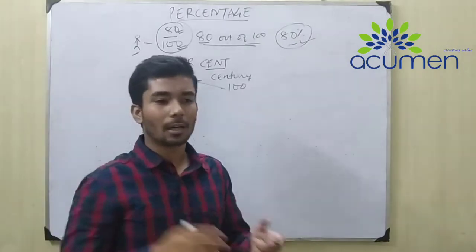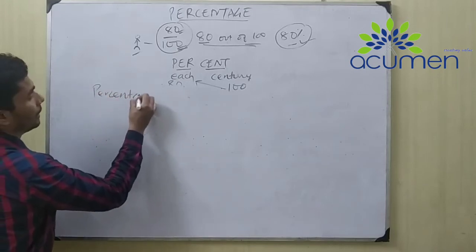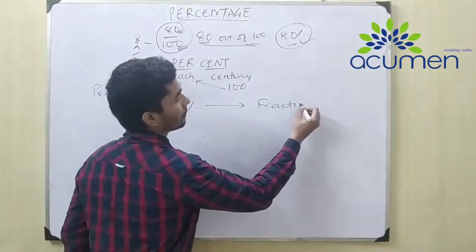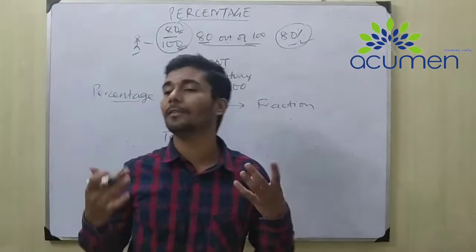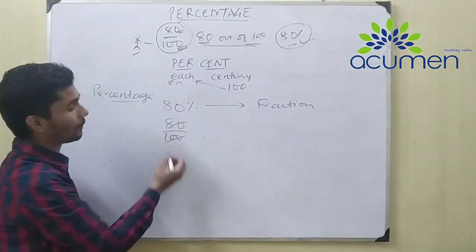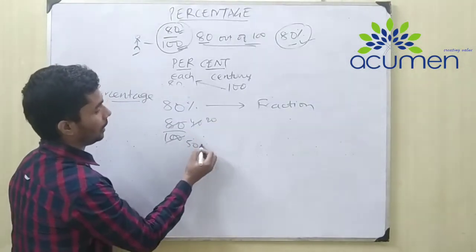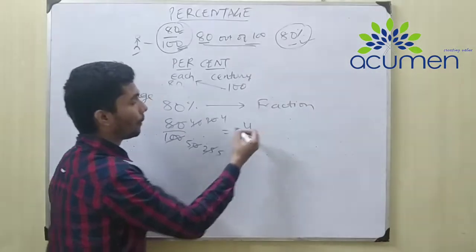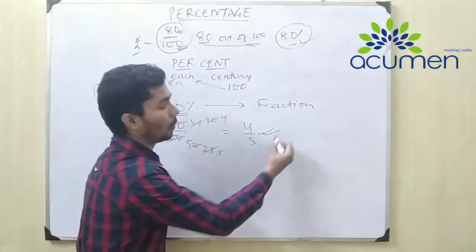Now let's see how we can convert a percentage into a fraction. If we have 80%, to convert this into a fraction, we just divide by 100 — removing the percentage sign and writing 100 in the denominator. So 80 divided by 100: we cancel and simplify. 80 over 100 simplifies to 4 upon 5. So 80% in fraction form is 4 upon 5.